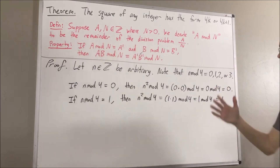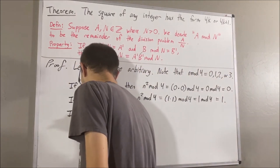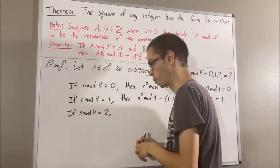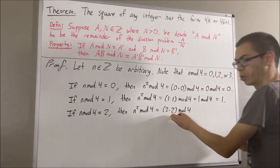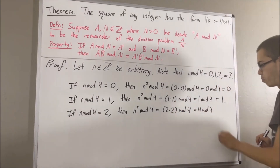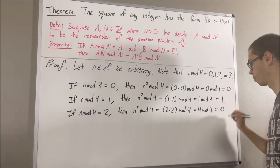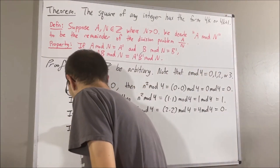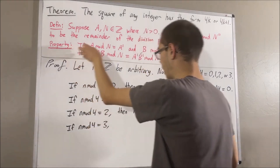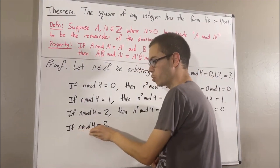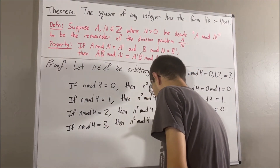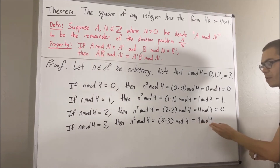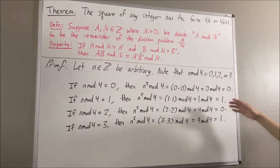Now for the case where n mod 4 is equal to 2: applying this property again, n times n mod 4 equals 2 times 2 mod 4. Two times 2 is 4, and the remainder of 4 divided by 4 is 0, because 4 is divisible by 4. Finally, for the case where n mod 4 is equal to 3: applying our property, n times n mod 4 equals 3 times 3 mod 4. Three times 3 is 9, and the remainder of 9 divided by 4 is 1. So we have covered all four cases.